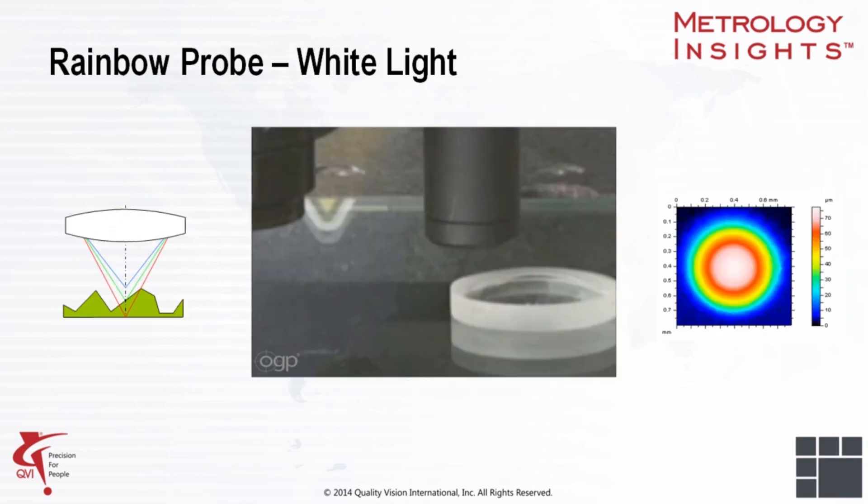The Rainbow Probe is an optical device that measures surfaces by analyzing changes in the optical spectrum as a function of part-to-probe spacing as it scans. The probe's small spot size enables the Rainbow Probe to access small features and its on-axis measuring technique allows it to measure recessed features that may not be accessible by other means.